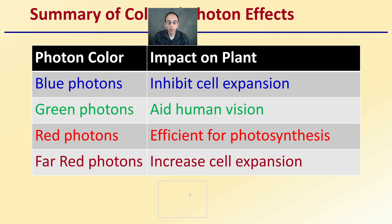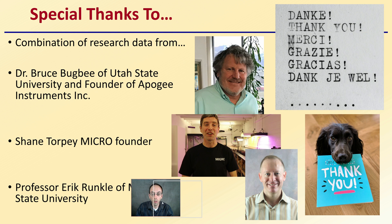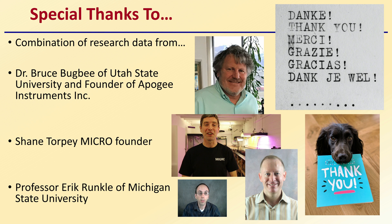In summary: blue photons inhibit cell expansion and keep plants short and compact; green photons aid human vision for diagnosing plants for nutrients or disease; red photons are very efficient at photosynthesis; and far red photons increase cell expansion. For further learning, researching the scientists referenced here will provide more information — they have a great body of work on the impact of photons and wavelengths on plant production.